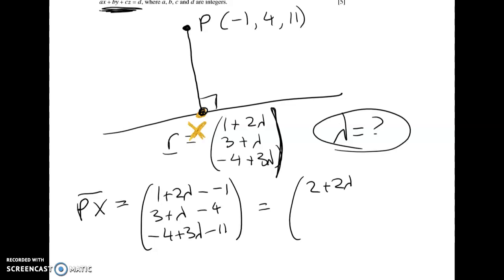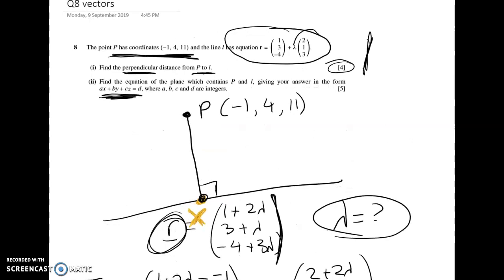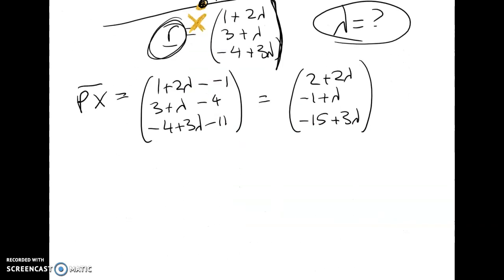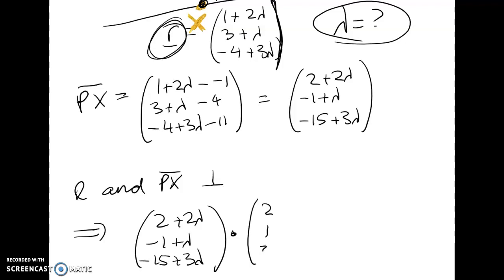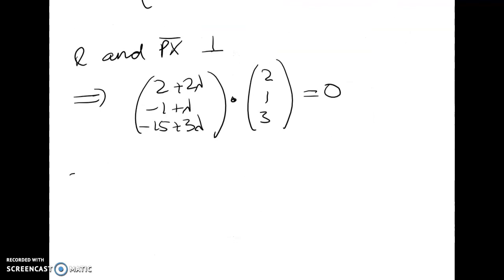So that gives me (2 + 2λ, -1 + λ, -15 + 3λ). Now we know the direction vector of my line is just (2, 1, -3), and that's given to us very clearly back up here. So L and PX are perpendicular, therefore this is true. Expanding that out we get 2 times (2 + 2λ) plus 1 times (-1 + λ) plus -3 times (-15 + 3λ) equals 0.